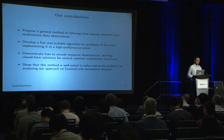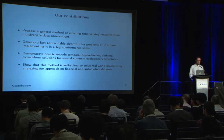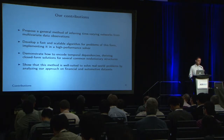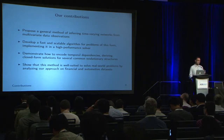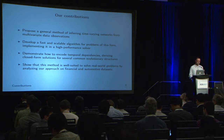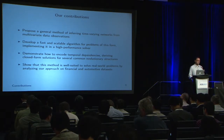We proposed the TVGL for learning time-varying networks from multivariate timestamped observations. We developed a scalable algorithm implemented in a high-performance open-source solver you can download. We show how to encode different types of temporal evolutions and derive closed-form updates within our algorithm for common evolutionary structures. Finally, we look at case studies applying this work to real-world datasets.